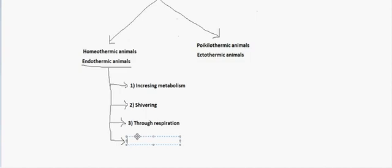A way of gaining heat is vasoconstriction. When we vasoconstrict, we don't lose heat because blood flowing through peripheral arteries is drastically reduced. Additionally, the little blood flowing through the constricted arteries generates heat by friction. So we gain heat through vasoconstriction. These are some ways through which endothermic animals can generate their own body heat — ways not present in ectothermic animals.